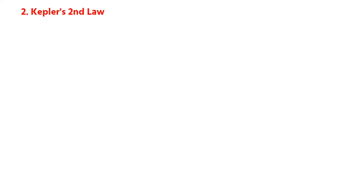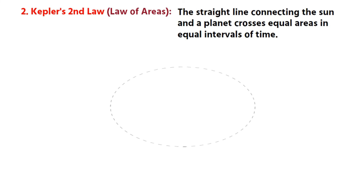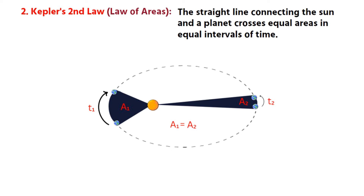Kepler's second law of planetary motion, also known as the law of areas, states that the straight line connecting the sun and a planet sweeps equal areas in equal intervals of time. Basically, planets do not move with constant speed along their orbits — their speed varies from place to place. The line joining the centers of the sun and the planet sweeps out equal parts of an area in equal intervals of time.